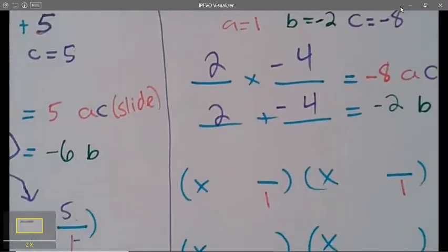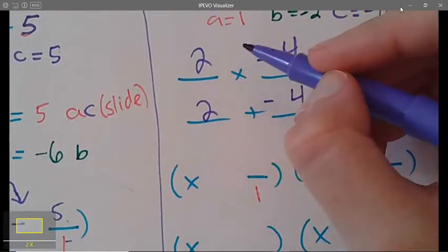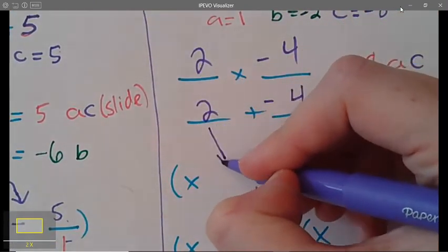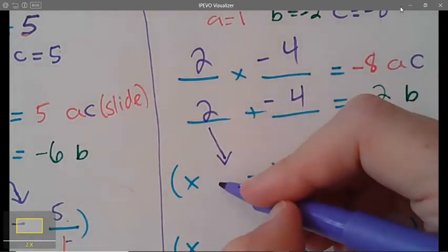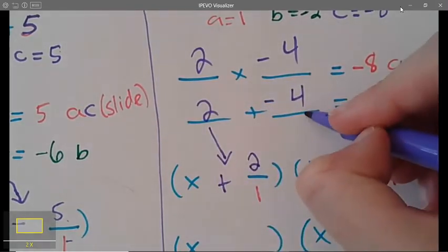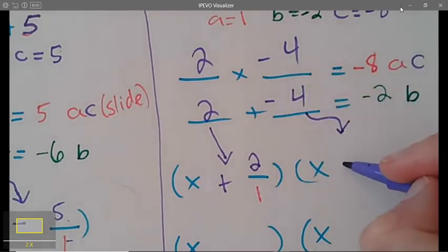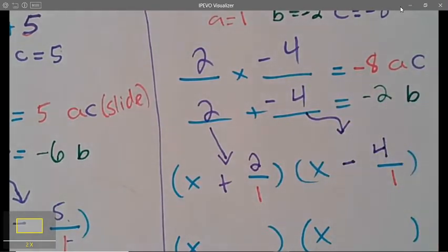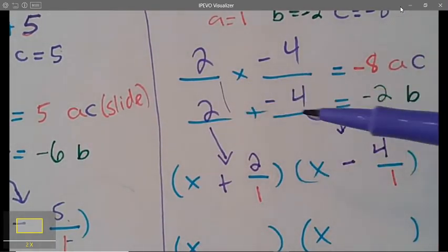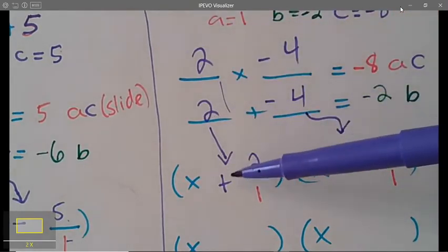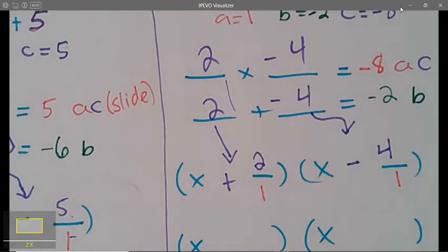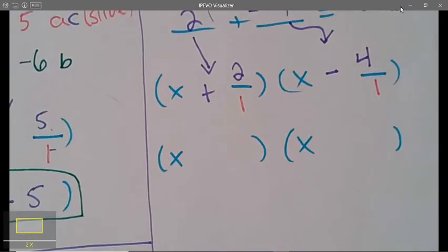So then after that you just take these numbers and bring them on down. This is a positive 2, so I'm going to put plus 2. This is a negative 4, so I'm going to write minus 4. If it's positive you're going to add the number, if it's negative you're going to subtract the number.